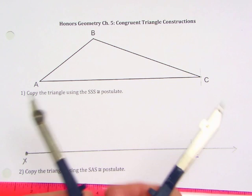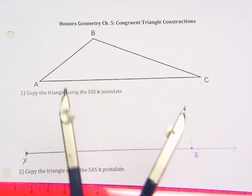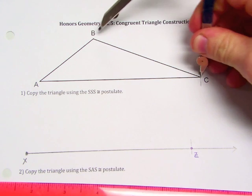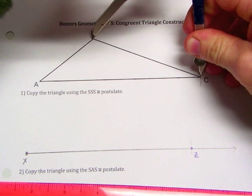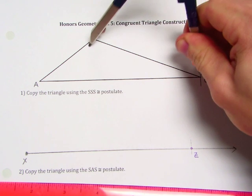Now since we're going to be using side-side-side, we need to copy all three sides. We're going to shrink this down a little bit and copy segment BC now. So we open up our compass the length of BC.